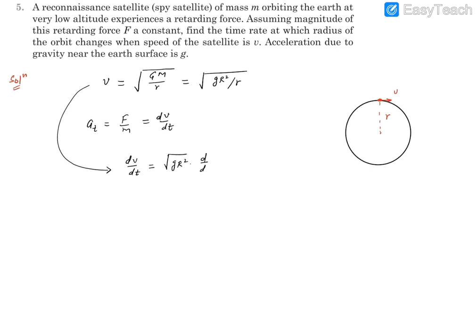D upon DT performed on R raised to power minus half. This will become square root of gR² and from this you get minus 1 by 2 R raised to power minus 3 by 2 dR by dt.